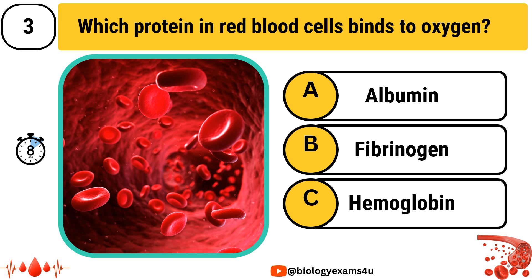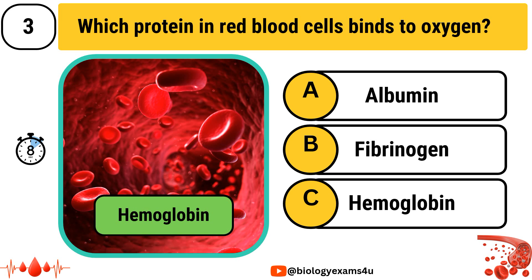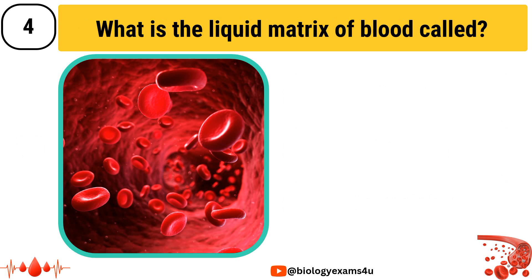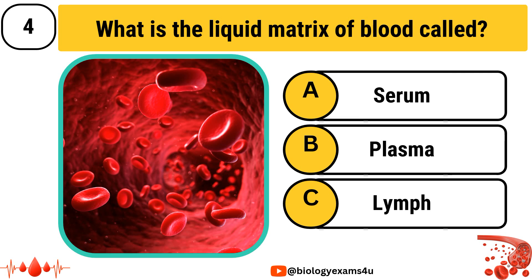The answer is Hemoglobin. What is the liquid matrix of blood called? The options are Option A: Serum, Option B: Plasma, Option C: Lymph.